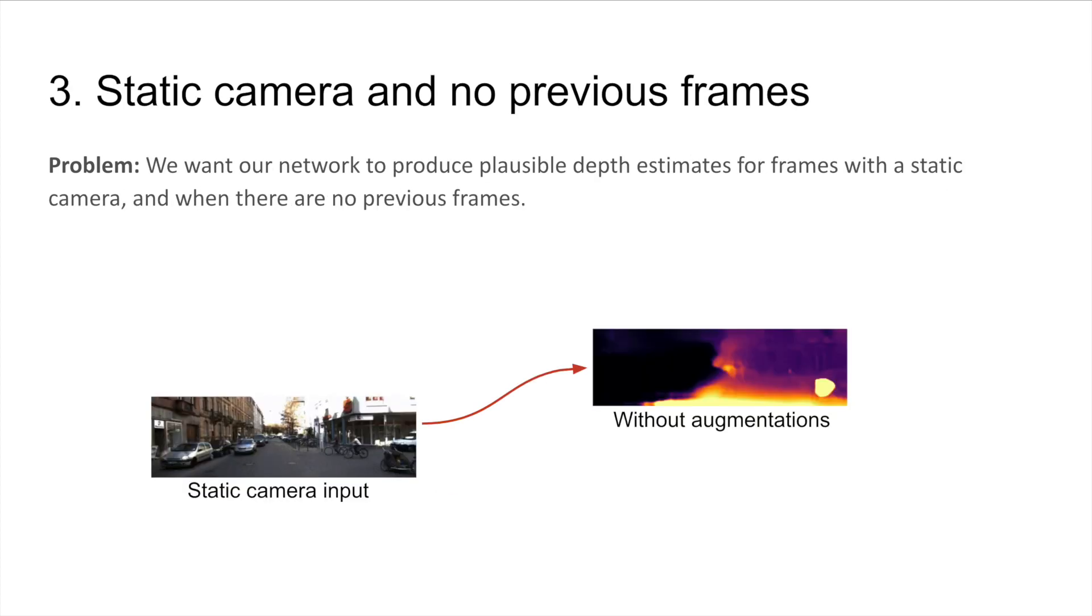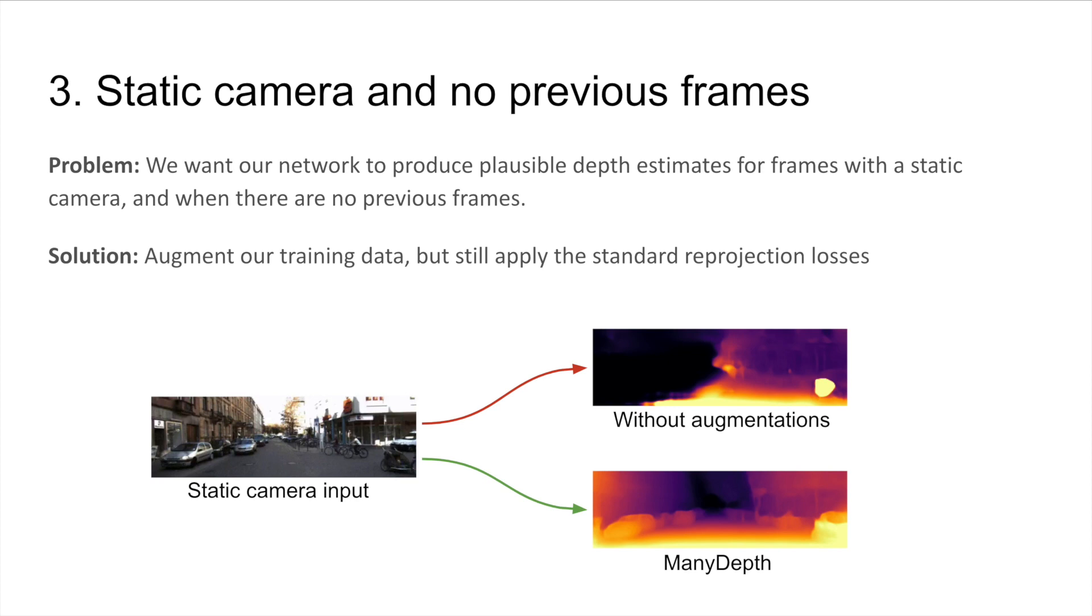Final problem is that we want our network to produce plausible depth estimates for frames with a static camera, or when there are no previous frames. To do so, we propose using data augmentation, randomly simulating a static camera by feeding duplicate frames into our network, or by zeroing out the cost volume.